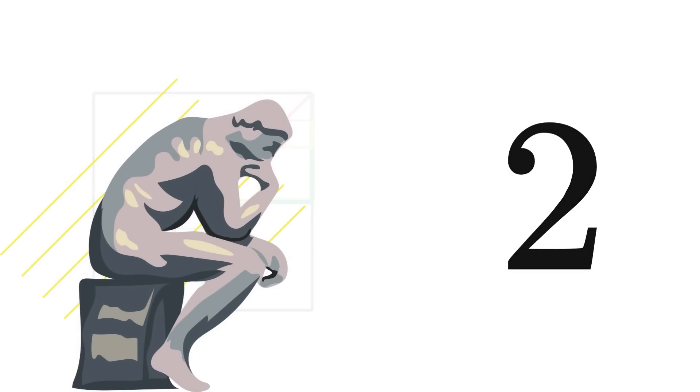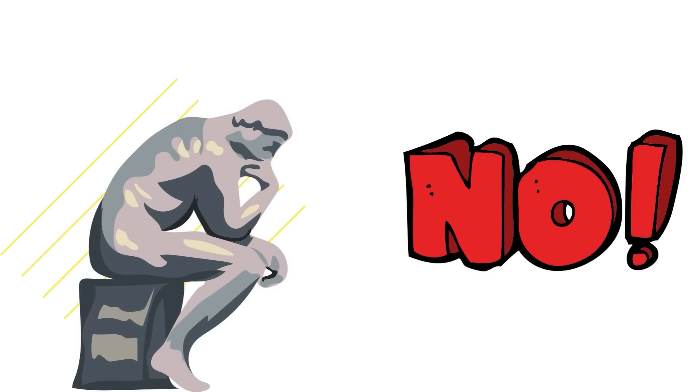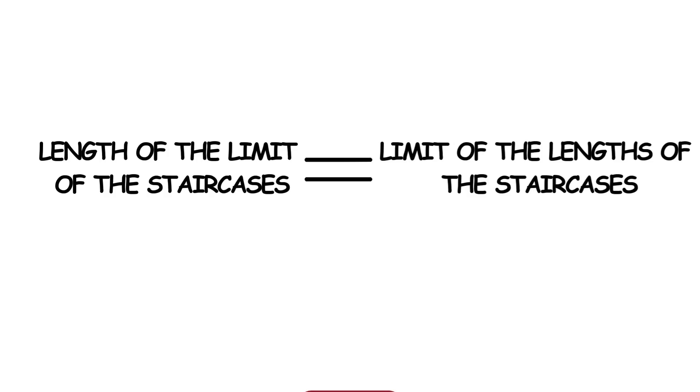the limit of the sequence of staircase lengths is 2. But does that mean that the length of the diagonal is 2? No, it doesn't. While it is tempting to assume that the length of the limit of the staircases is equal to the limit of the lengths of the staircases, this is actually false.